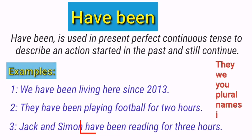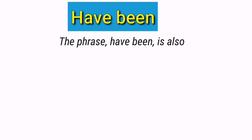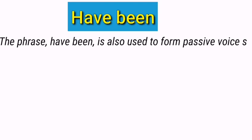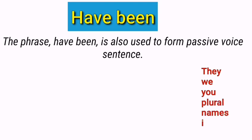The next usage: the phrase 'have been' is also used to form passive voice sentences. It is used in the passive construction of present perfect tense. This point you should keep in mind — it only appears with these subjects: they, we, you, plural names, and I. Just look at these examples.